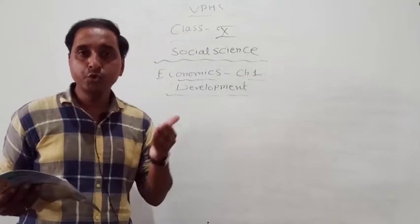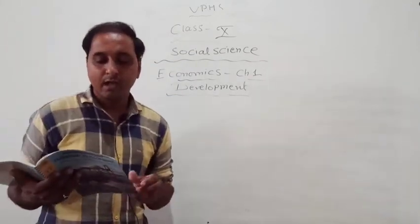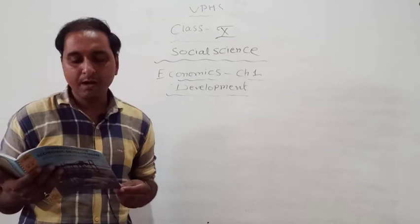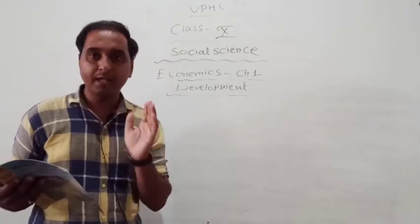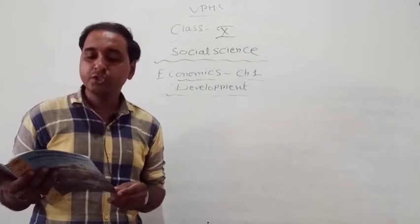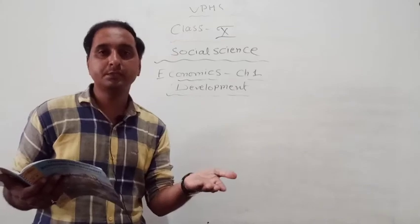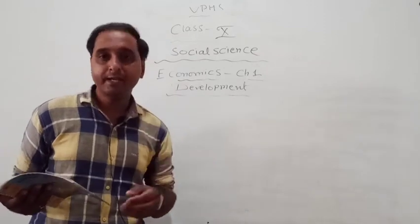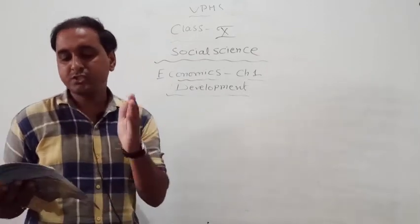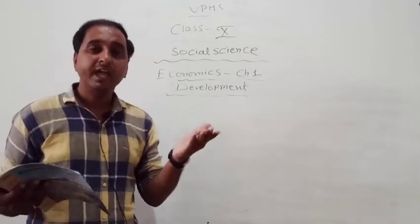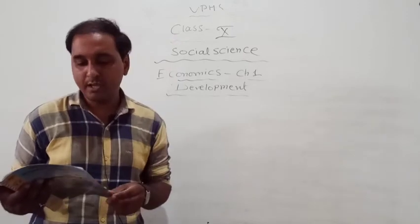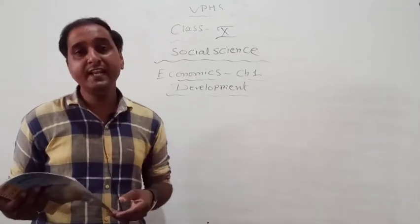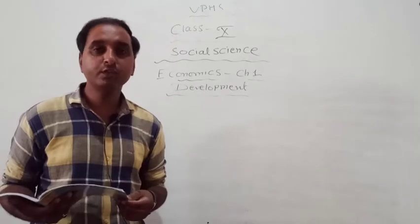When we compare different things, they could have similarities as well as differences. We can use certain aspects and measures to do some comparison. For example, a healthy student in a class can be strong, can be intelligent, can be friendly, can have a friendly nature, and can be compared on various criteria.